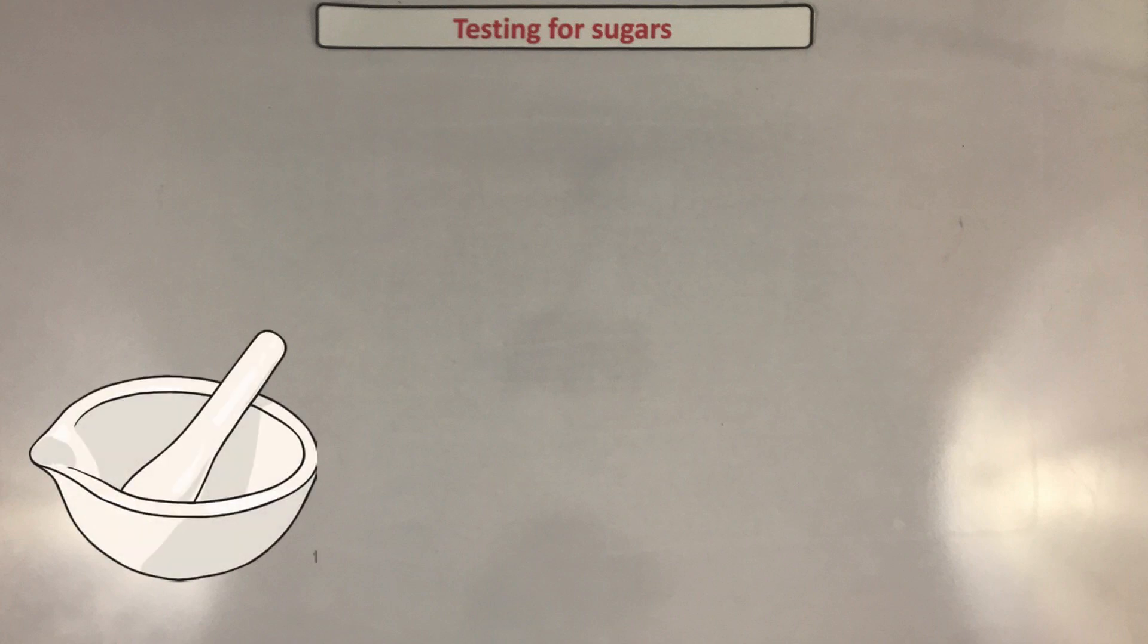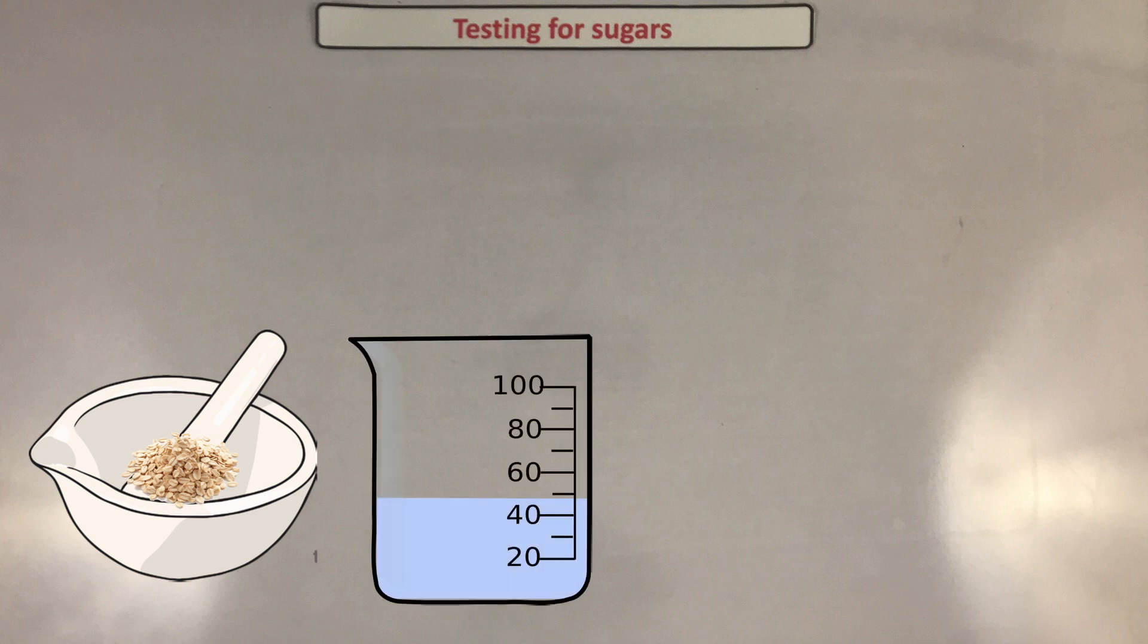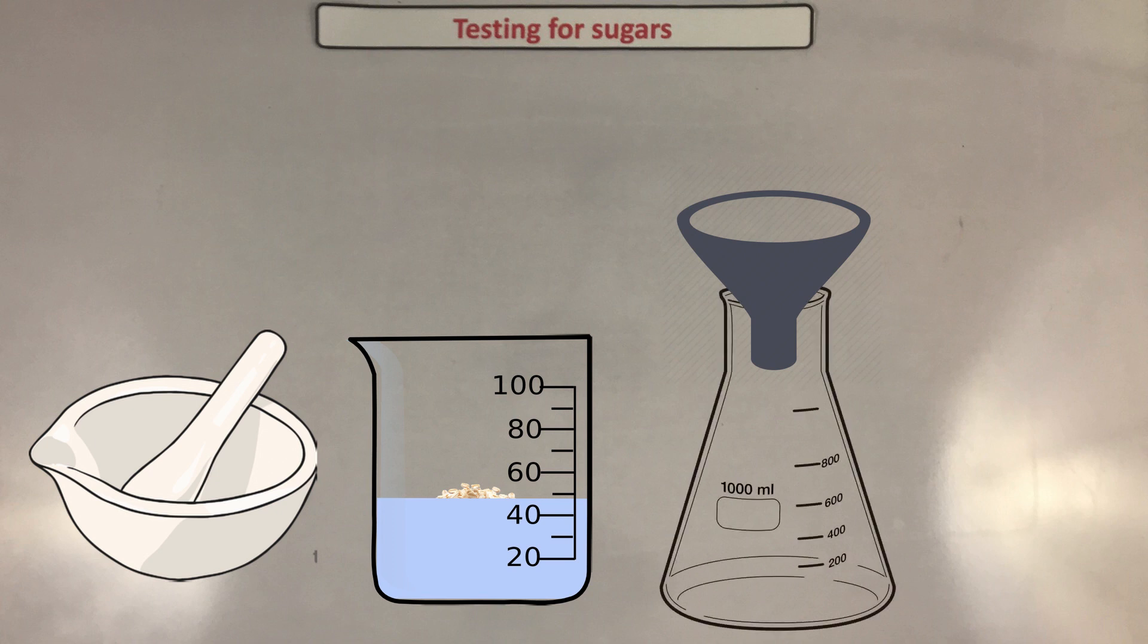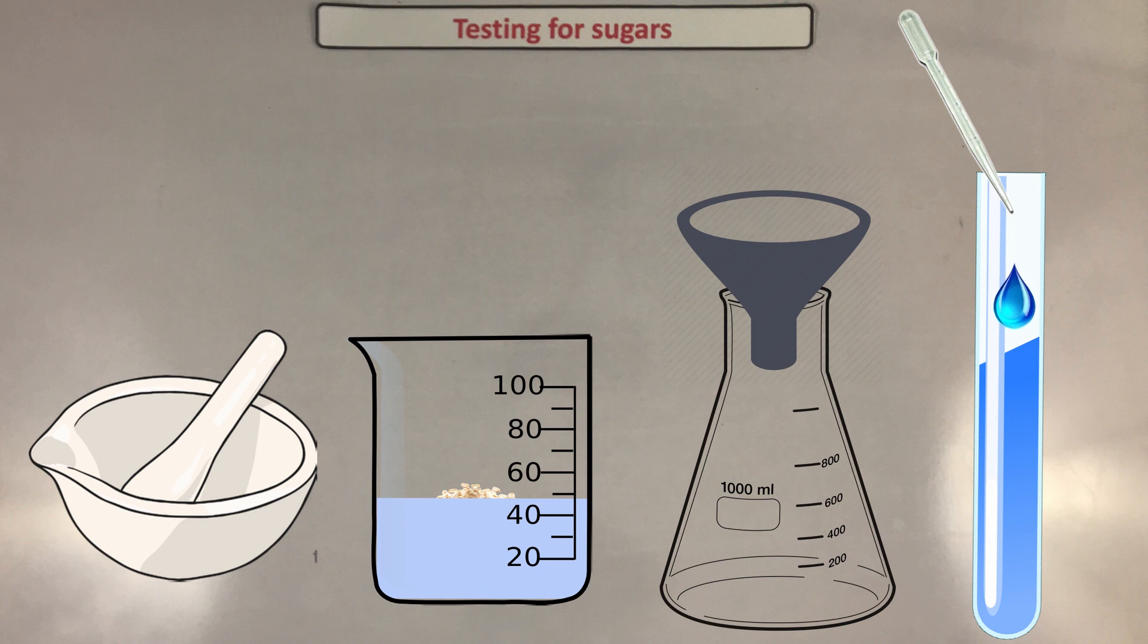Here are the steps: number one, you grind your food with your pestle and mortar. Number two, you add your food to a beaker with distilled water. Number three, you stir it so that some of your food is dissolved. Number four, you then filter using your filter paper and funnel and conical flask.